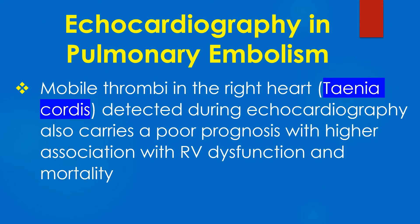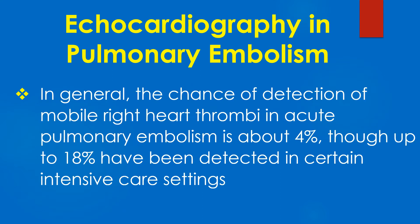Mobile thrombi in the right heart, known as thrombus in transit, detected during echocardiography carry a poor prognosis with higher association with right ventricular dysfunction and mortality. In general, the chance of detection of mobile right heart thrombi in acute pulmonary embolism is about 4%, though up to 18% have been detected in certain intensive care settings.